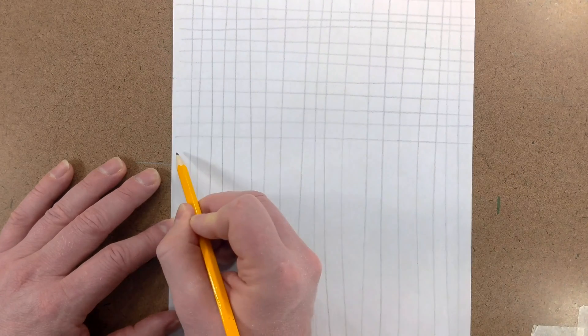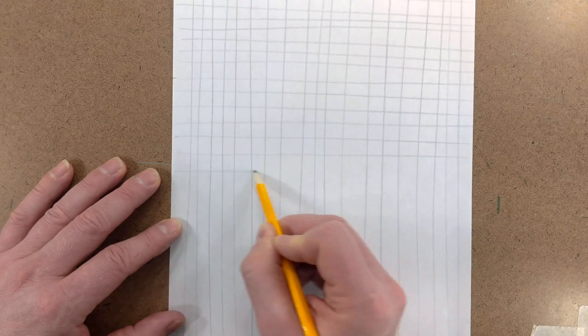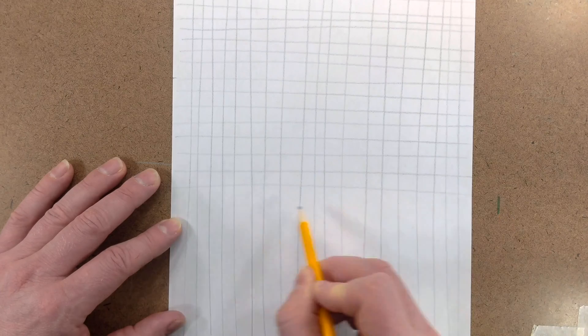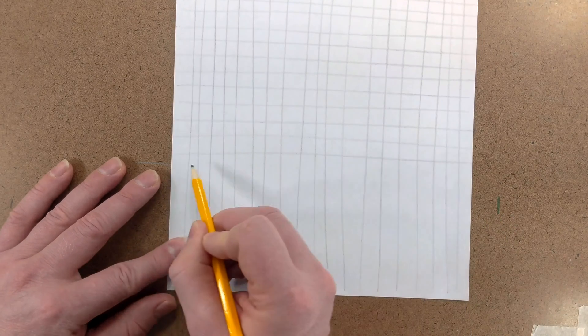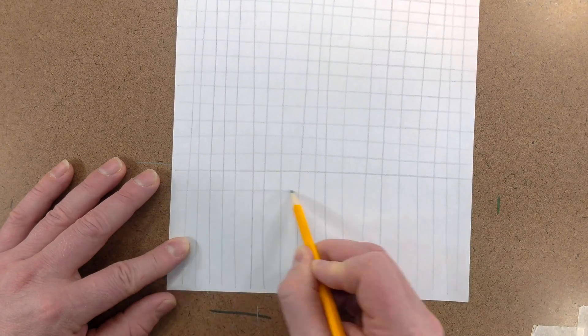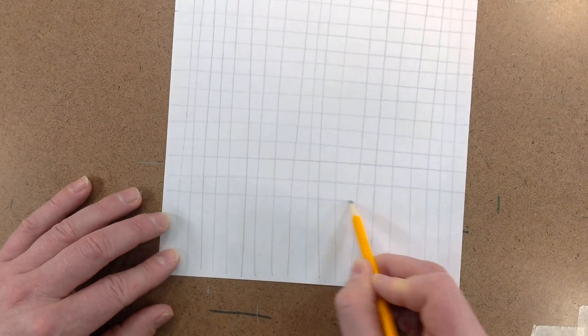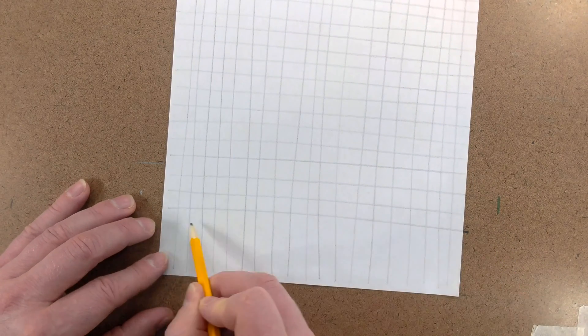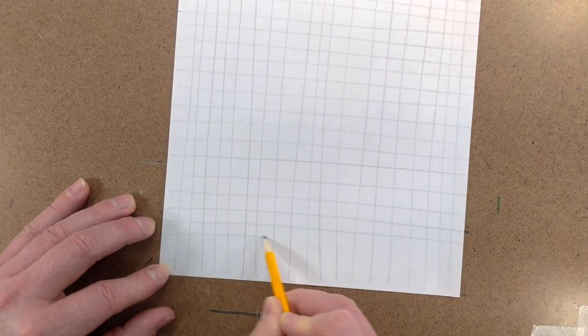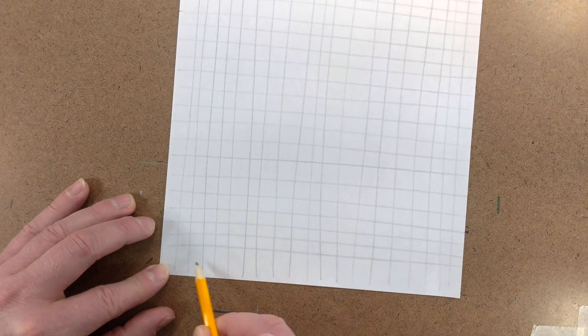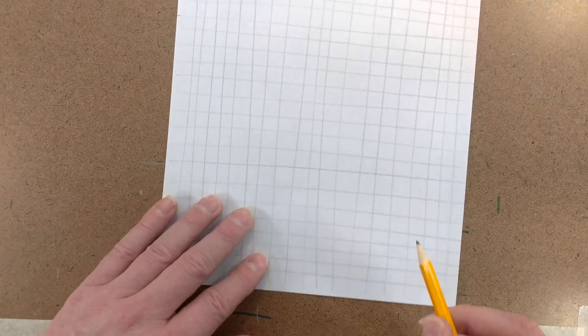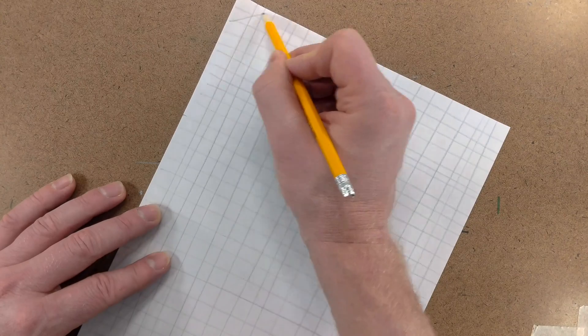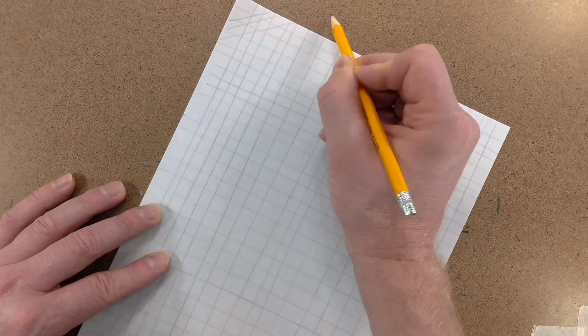The more you do this, the straighter your lines will be and the more confident you will be in your sketching. The important thing here is that you're able to draw parallel lines. Once you've done that, we also want to try to draw them at an angle.